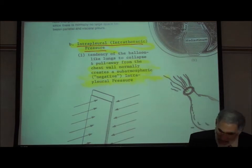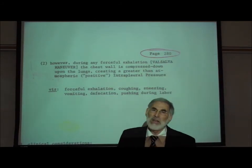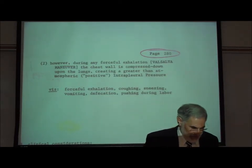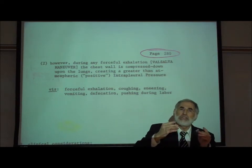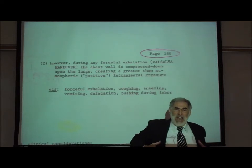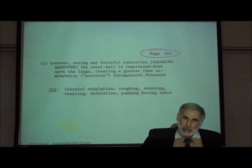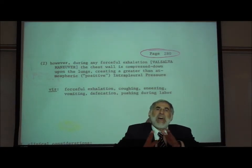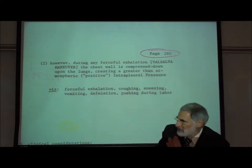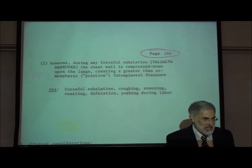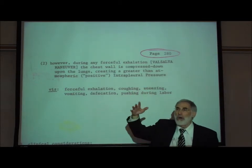What happens with a Valsalva maneuver? During a forced exhalation or Valsalva maneuver, this causes the pressure in the pleural cavity to actually increase. In a Valsalva maneuver, one is forcefully exhaling and contracting the chest wall, pushing it down onto the lungs. Pushing the chest wall down onto the lungs is similar to pushing one slide against another — that increases the pressure between them. In this case, it increases the pressure in the pleural cavity causing a greater than atmospheric or positive intrapleural pressure.